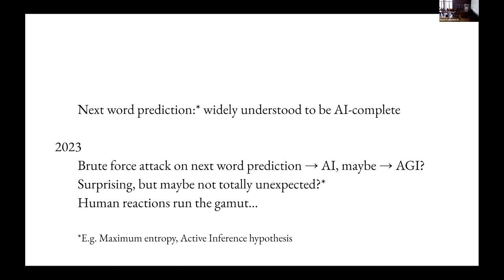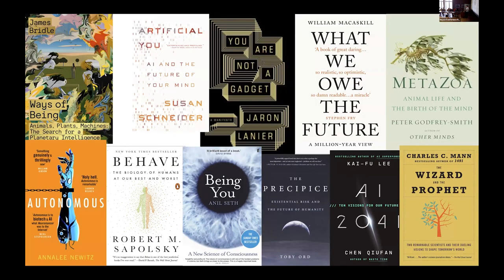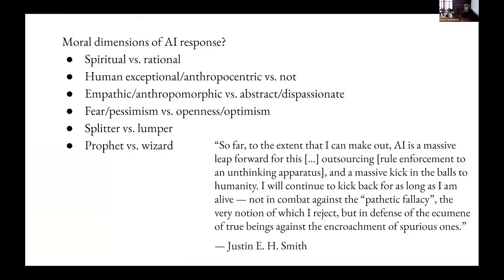Human reactions have really run the gamut. I think in many ways there's something a little bit Rorschach-blot-test-like about what the human psychology is in response to these kinds of things. There are lots of books whose last chapters, basically any non-fiction book written in the last two years has a last chapter that is about AI. And they all have various different attitudes about this. I feel like it's almost like moral dimensions of AI response sort of thing, depending on whether people are more spiritual or rational or more human exceptional or anthropocentric versus not or empathic versus abstract or dispassionate, are dominated by fear or pessimism versus openness or optimism or splitters versus lumpers. I feel like these dimensions predict in large part what people are going to say.